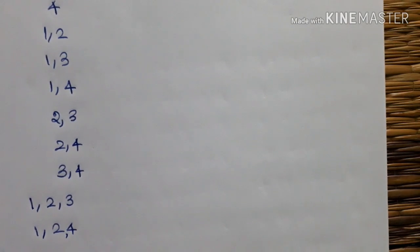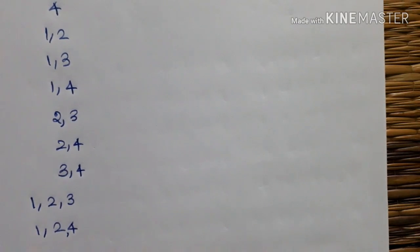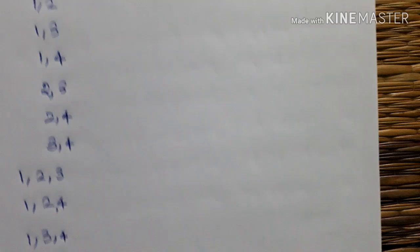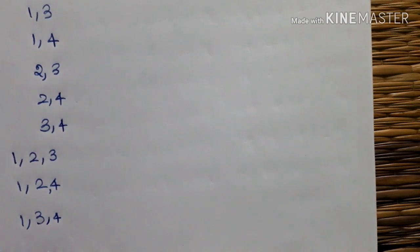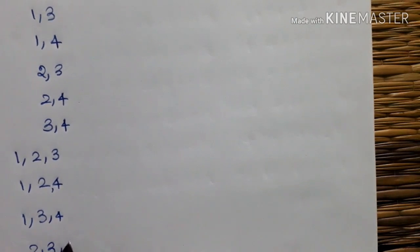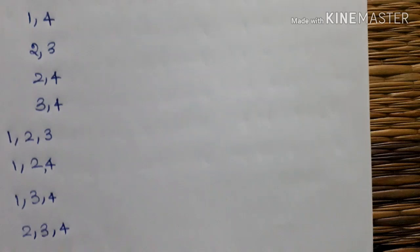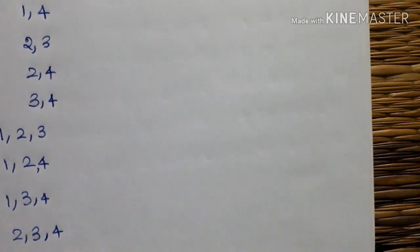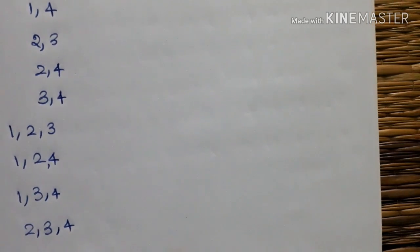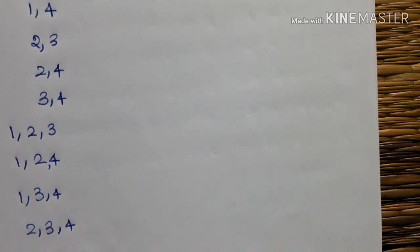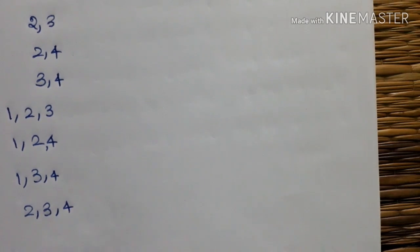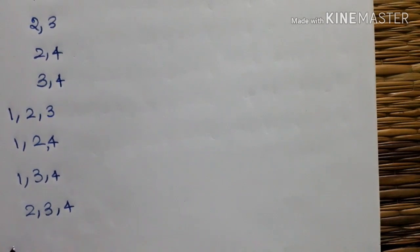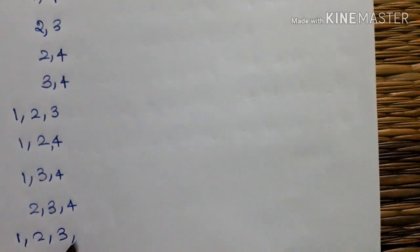And the first one: 1, 2, and value. To define the 1, 2, and value. That's the 1, 2, and value. So we will solve the possibilities. Next, we will solve the problems: 2, 3, 4. Then 1, 2, 3, 4. Next, we will solve the problems. And the second one, if we will solve the problems: 1, 2, 3, 4.